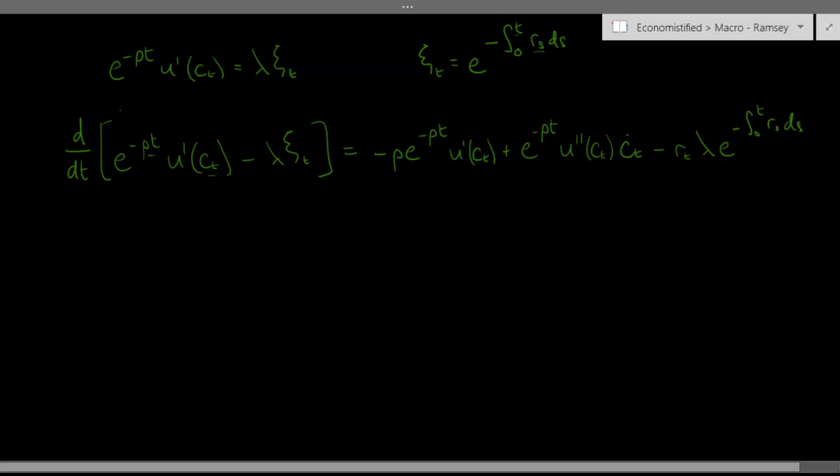Now, this term here is obviously just ct again, and so lambda t times ct, in the first-order condition, is just going to be equal to discounted marginal utility, e to the minus rho t times u prime ct. And this whole expression is equal to zero, by the way.